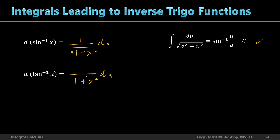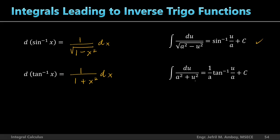We'll do the same process: replace all x with u, and change 1 to a squared. When we integrate, we should get the inverse tangent. So the integral of du over a squared plus u squared equals 1 over a times tan⁻¹(u/a) plus C. Notice that compared to the inverse sine formula, the inverse tangent formula has a coefficient of 1/a, and its integrand has no square root — just a sum of squares.